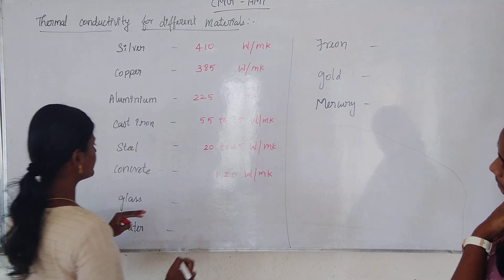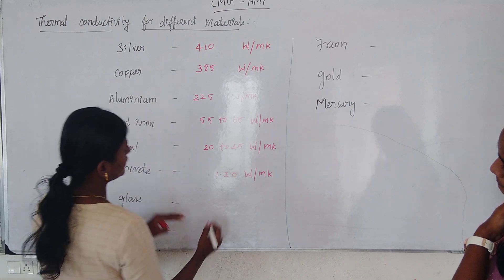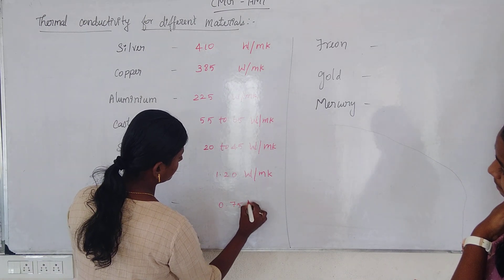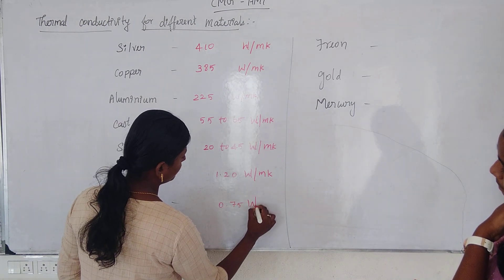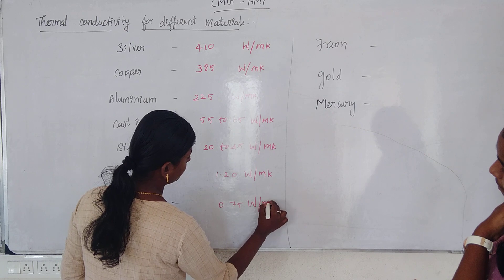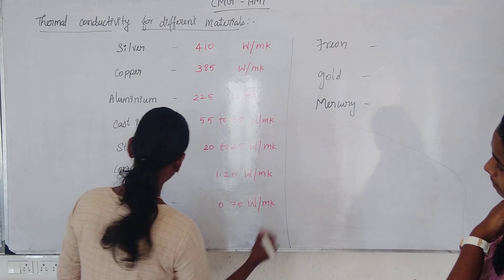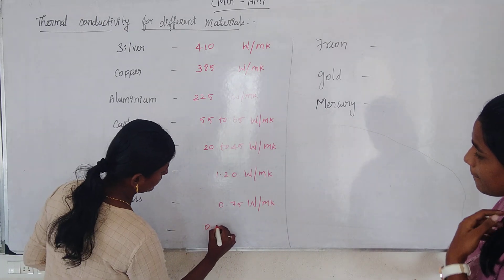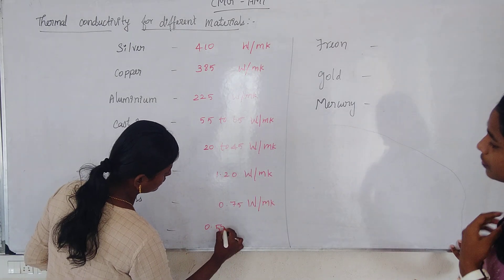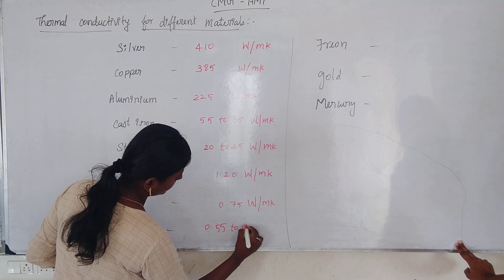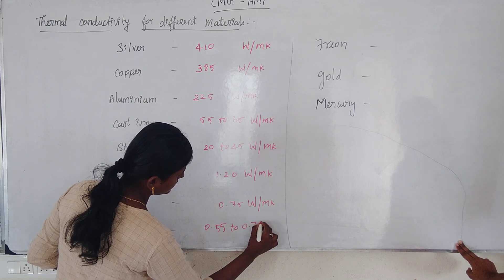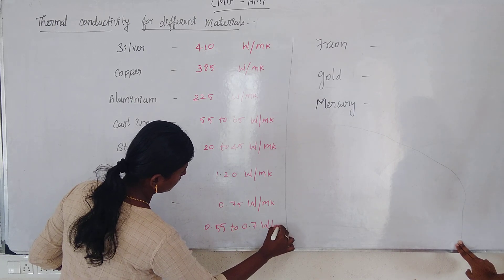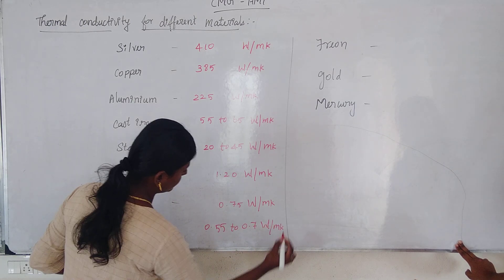Next is glass. Glass's thermal conductivity range is 0.75 watt per meter Kelvin. Next is water. Water's thermal conductivity range is 0.55 to 0.7 watt per meter Kelvin.